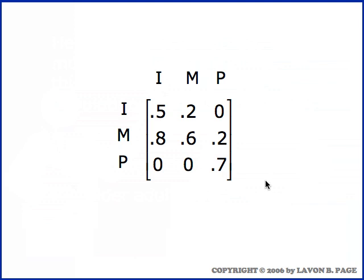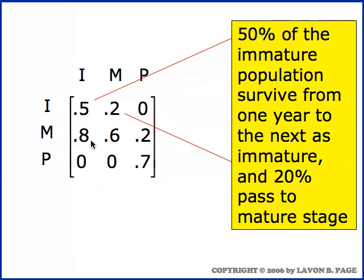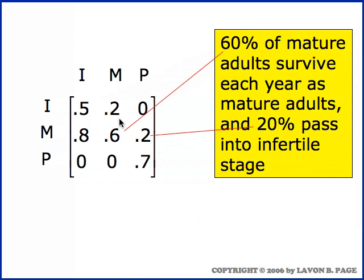In the first row we have the data on what happens with the immatures over the course of a year: fifty percent of them survive and remain in that group, and twenty percent of them age out into the mature group — the remainder die. In the mature group over the course of a year, sixty percent survive within that group and twenty percent age out into the older group.